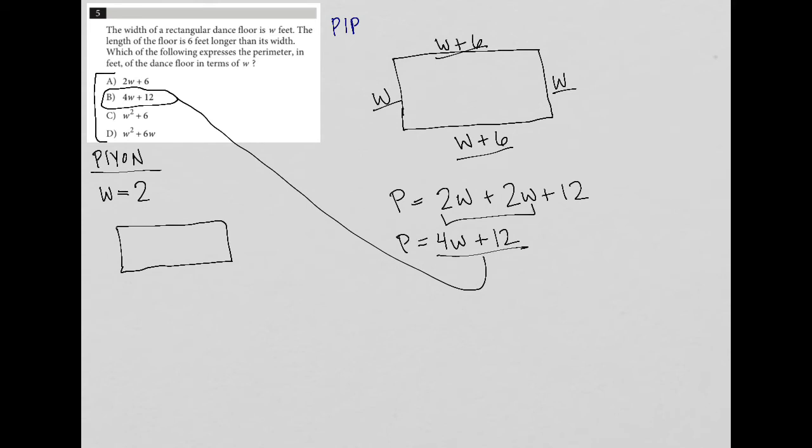And now instead of W, I'm going to say, hey, I'm going to make up my own number and say the width is equal to two. And then the question tells me that the length is six feet longer than the width. So that means my length would be eight.